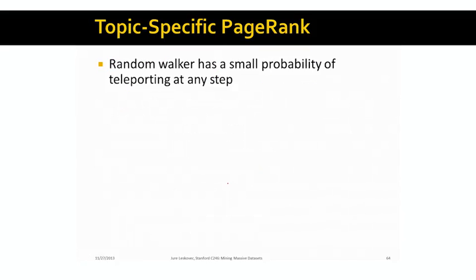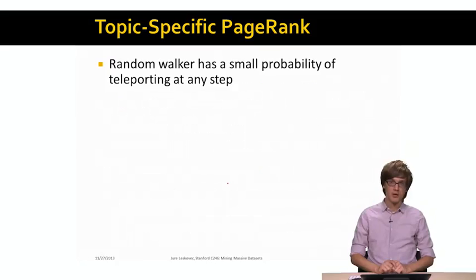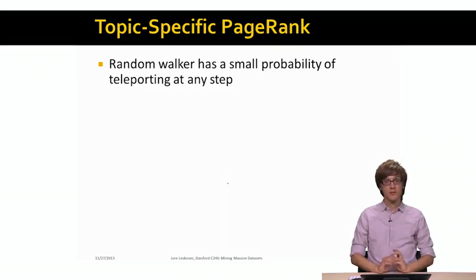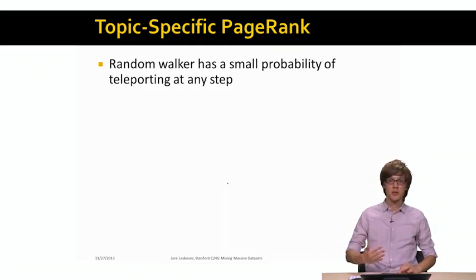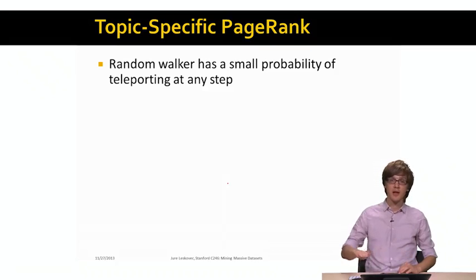So the question is, how do we achieve this? The way we achieve this is actually to do a small but very clever trick to the PageRank formulation. So far, we talked about the random walker that with a very small probability can teleport from one page to any other page on the web, and we made the assumption that the teleportation lands the random walker uniformly at random at any other web page.